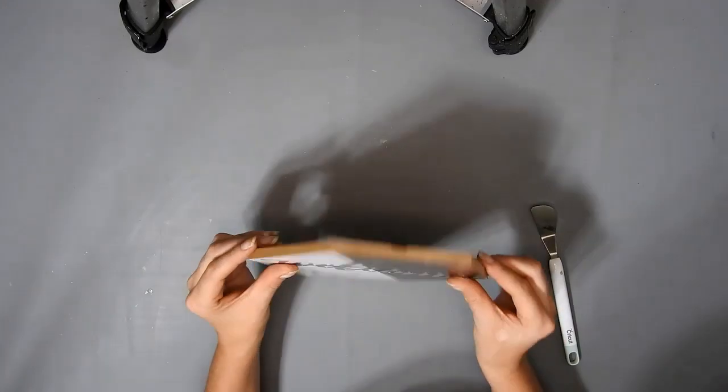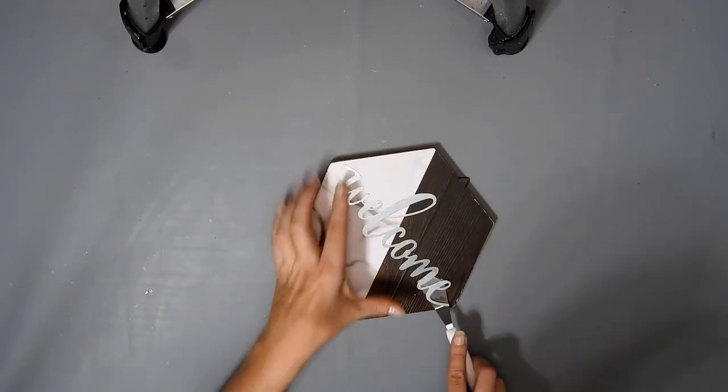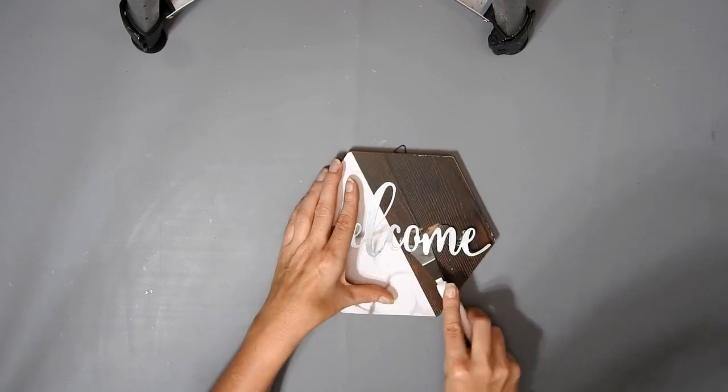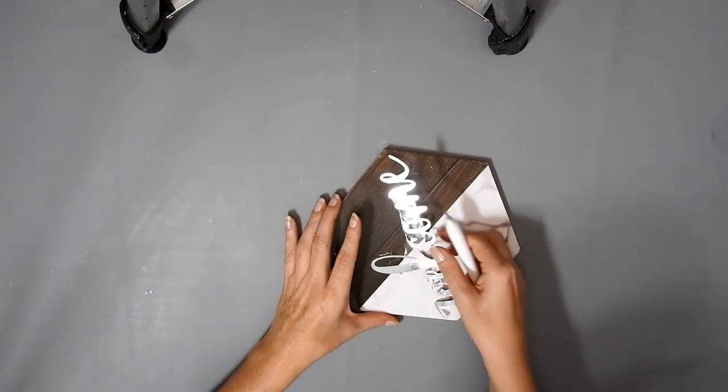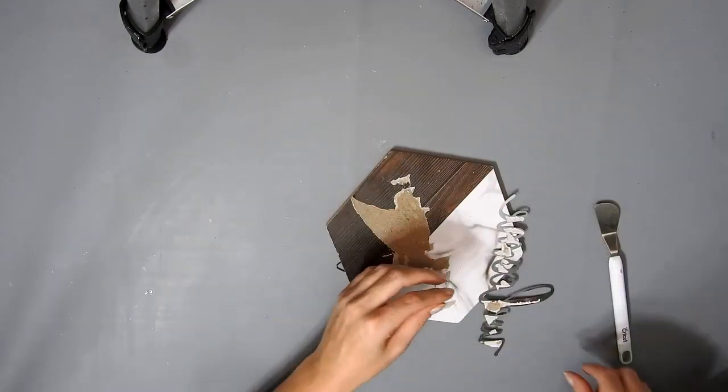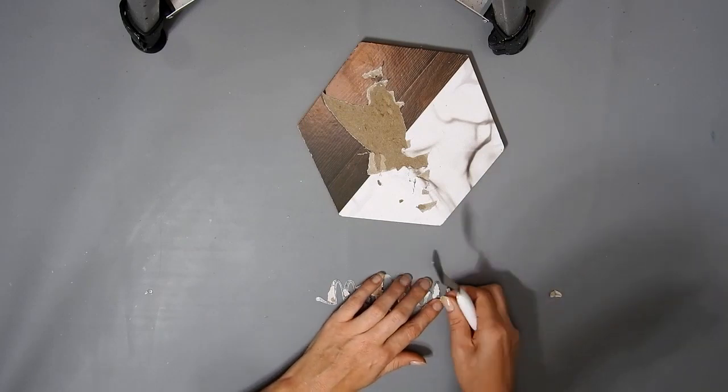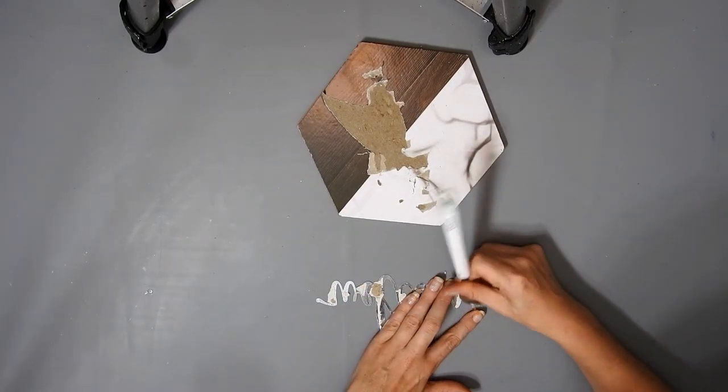I have this little hexagon welcome sign and I'm just using my Cricut tool to take the metal welcome off because I want to keep it flat. I'm going to use that part and the wooden part in the future. I'm just scraping off all the extra paper off the back.